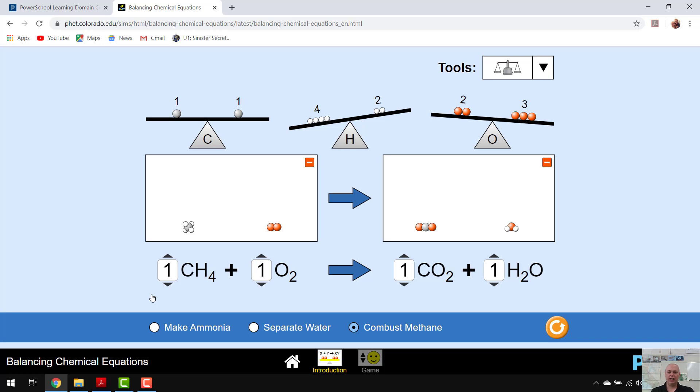So let's see. Carbons are okay. Hydrogens, let's increase the number of hydrogens we have. We have four on the left side and I only have two on the right side. So if I increase the number of moles, now my hydrogens are balanced. But my oxygens are still way off. Carbons are good. Hydrogens are good. Oxygens are off.